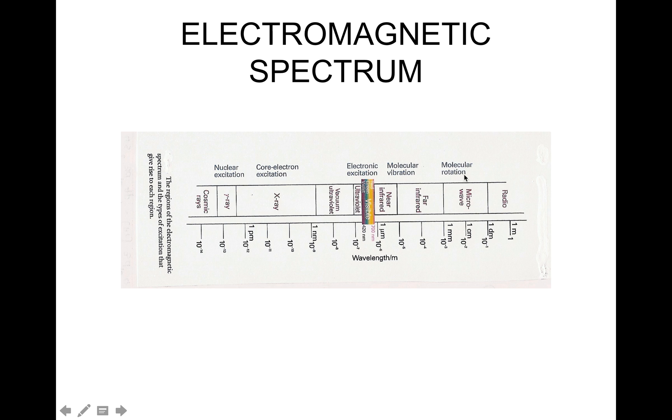Above this line we have molecular rotations in microwave sections, molecular vibrations in the infrared section, while electronic excitations are in the visible region and ultraviolet. Core electron excitation is in x-rays and nuclear excitations in gamma rays.